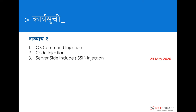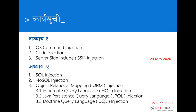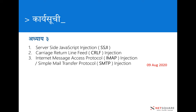I have already covered OS command injection, code injection, and SSI injection in DI1. You can find those slides and videos on YouTube. I have also covered SQL injection, NoSQL injection, and ORM injection — including JPQL injection and DQL — in previous sessions. In this session (DI3), I will cover server-side JavaScript injection, CRLF injection (carriage return and line feed injection), and SMTP injection (Simple Mail Transfer Protocol injection).